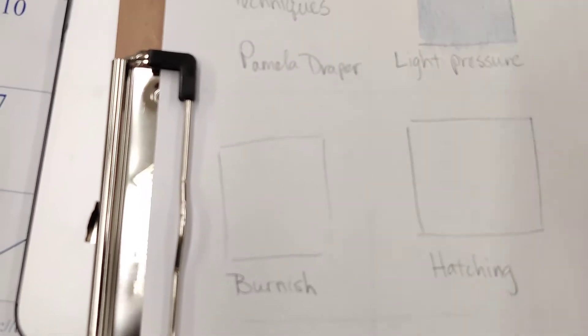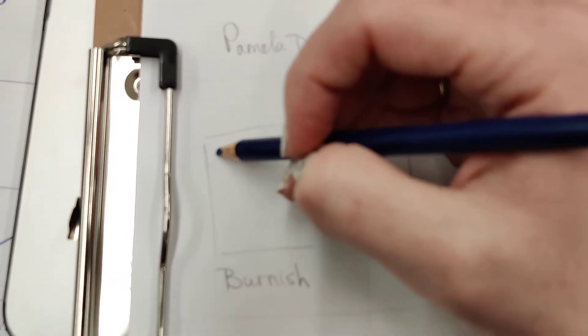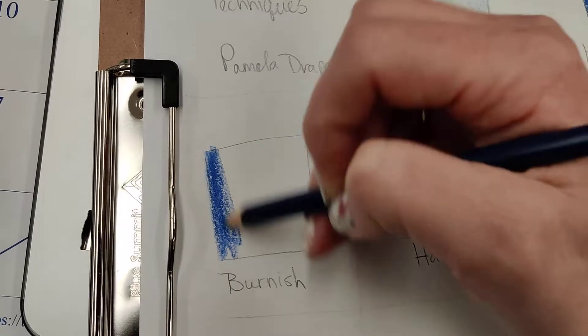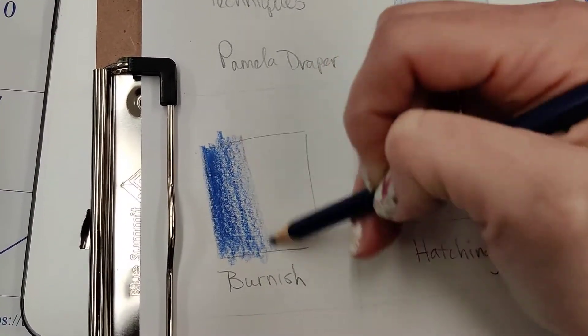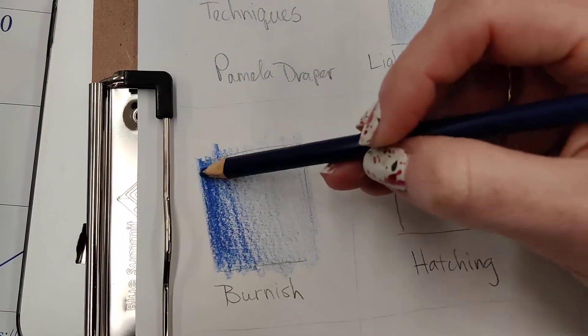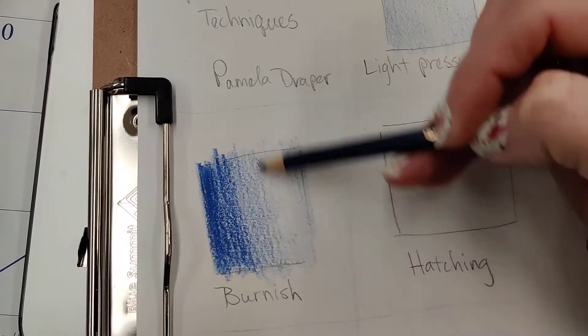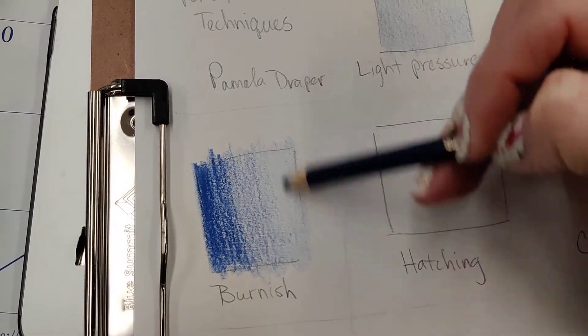So, now we're going to do a little technique called burnishing. And you can do this a couple of ways. How we're going to learn how to do it is with an eraser. So, again, we're going to do a gradation of darker to light.